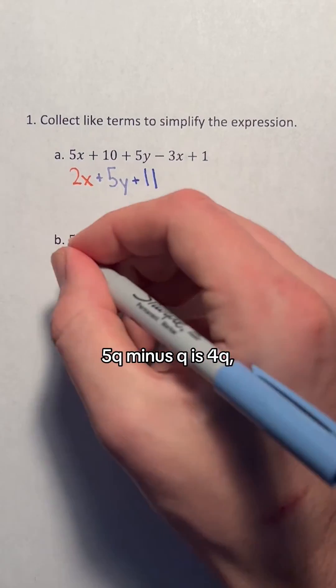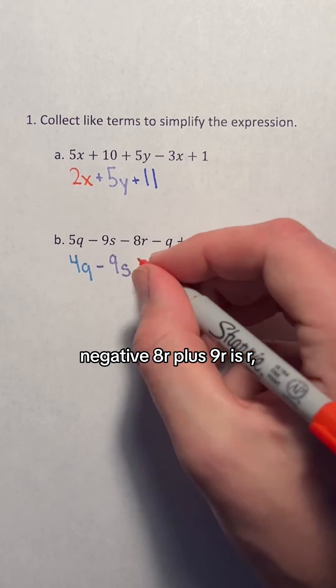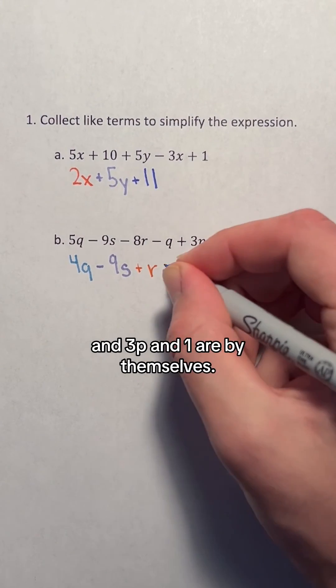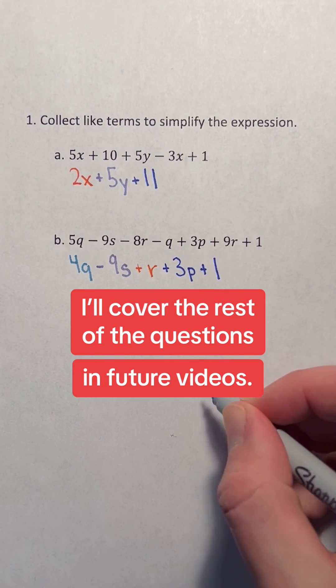5q minus q is 4q. Negative 9s is by itself. Negative 8r plus 9r is r. And 3p and 1 are by themselves. I'll cover the rest of the questions in future videos.